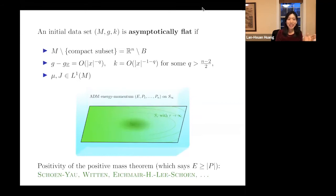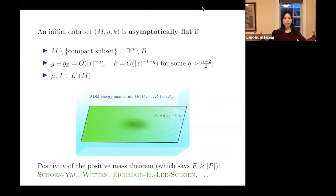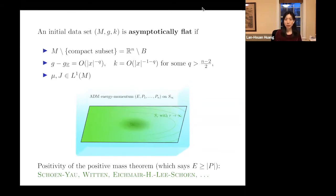Under the least-decaying assumption we can define the ADM energy-momentum. These are just numbers e, p₁, …, pₙ computed by integrals over spheres sent to infinity. These numbers are very important invariants. For example, there is a positive mass theorem which says, under some condition, e ≥ |p|, where p is the linear momentum and e is the ADM energy. The positivity part of the positive mass theorem holds under this general decay assumption.